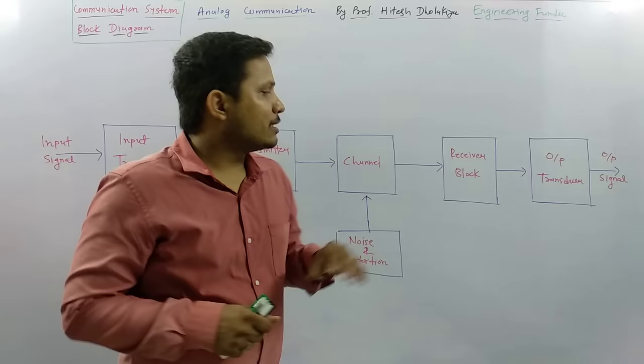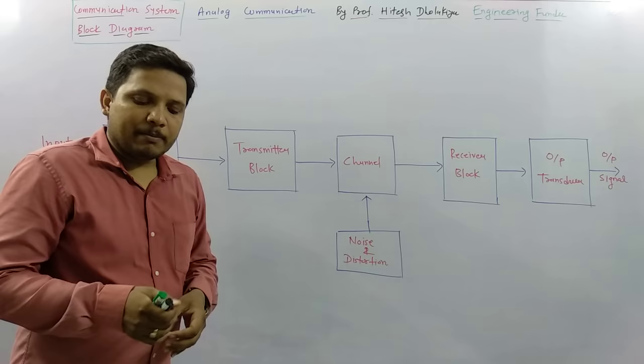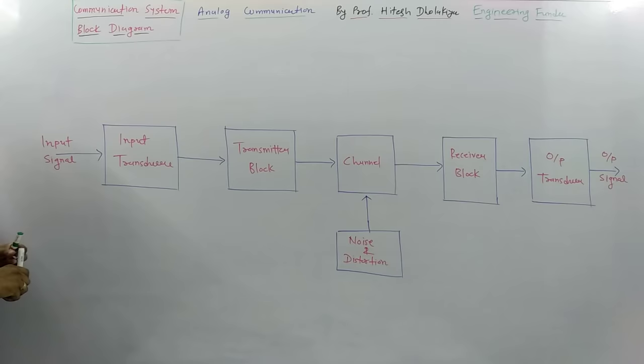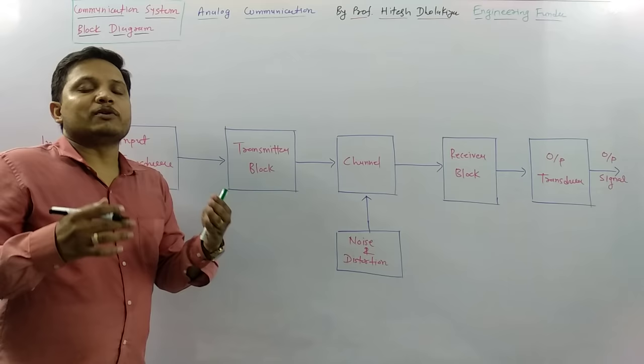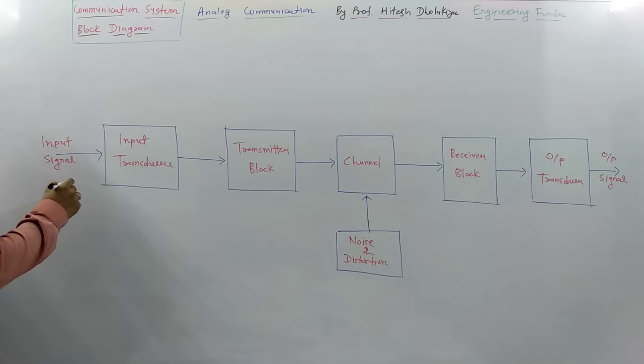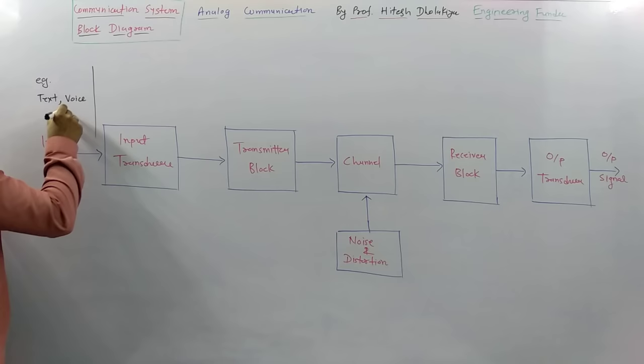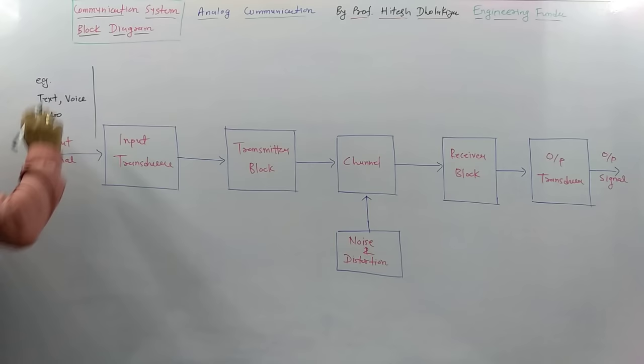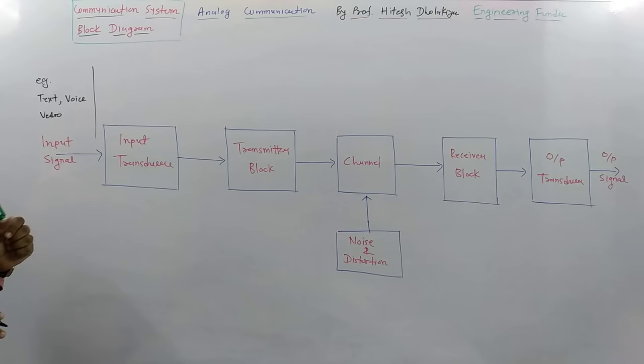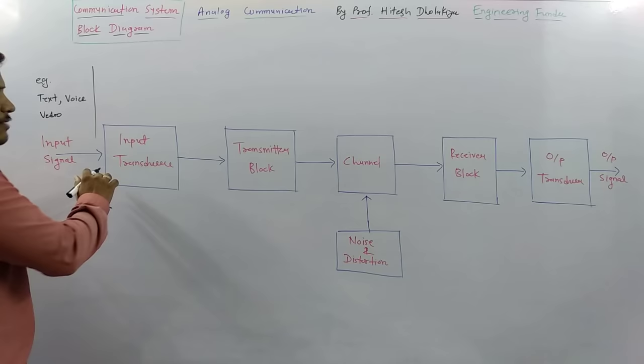During that complete process there are various blocks, which I will discuss one by one. The first thing is the input signal. That input signal could be a voice signal, a text signal, a speech signal, or a video signal — any of those could be there as the input signal.